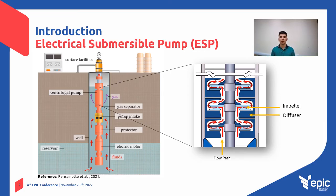The electrical submersible pump, ESP, is a multistage centrifugal pump used in the petroleum industry as an artificial lift method. The ESP is a hydraulic machine that transports mechanical energy from the electrical motor into kinetic energy of the liquid it transports. Electrical submersible pumps are currently one of the best artificial lift methods in terms of production rate.